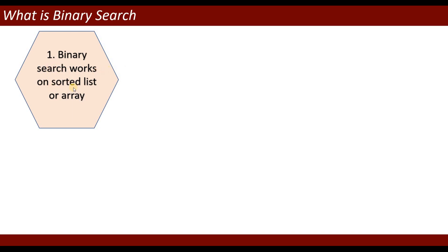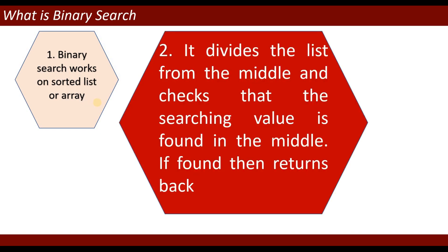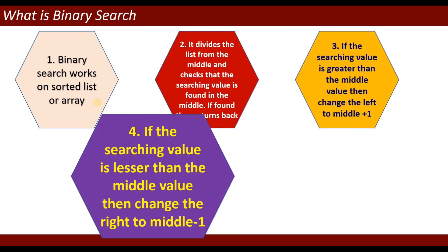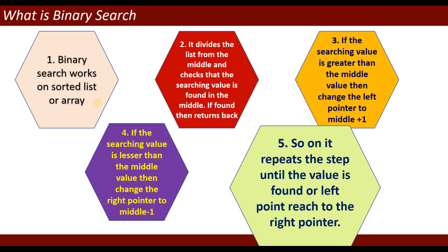Binary search works on a sorted list or array. If you have a sorted list then it will work, otherwise it will not work perfectly. It divides the list from the middle and checks if the searching value is found at the middle — if found, it returns. If the searching value is greater than the middle value, then change left to mid plus one. If the searching value is lesser than the middle value, then change right to mid minus one.